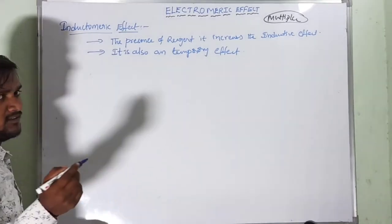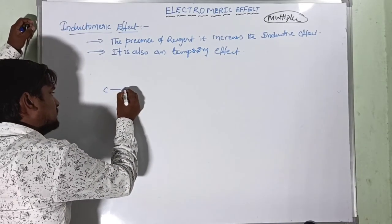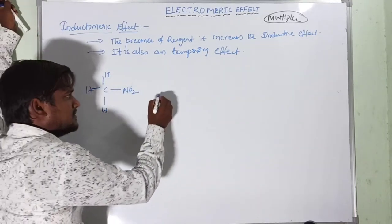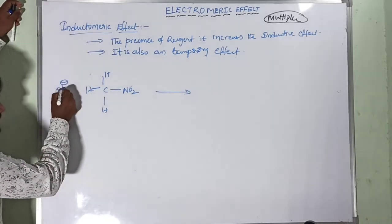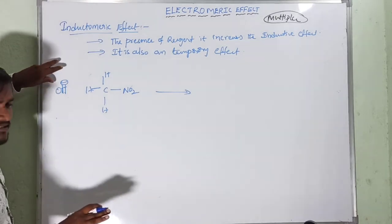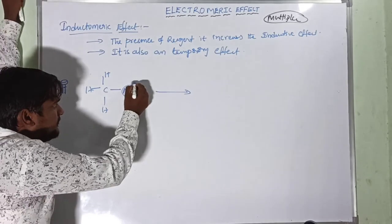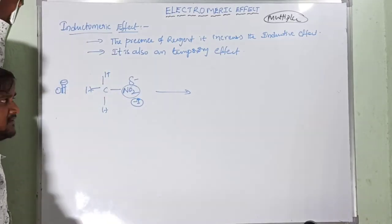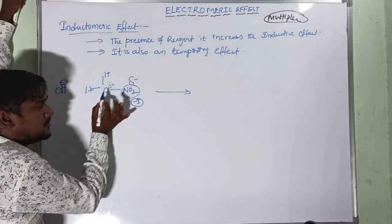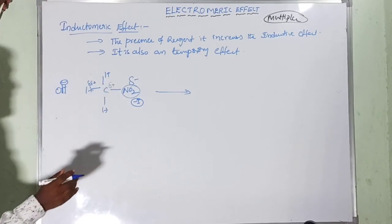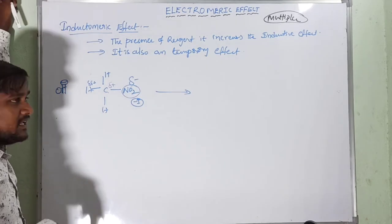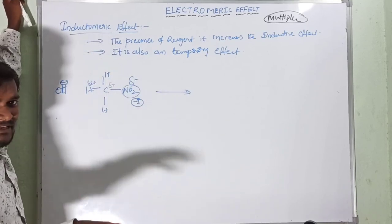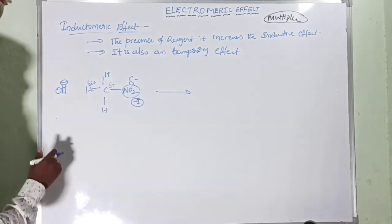Example: nitromethane (CH₃NO₂) treated with OH⁻ (a base). The nitro group has a −I effect — it pulls the electron cloud towards itself, making the adjacent carbon partially positive. In the normal inductive effect, nitrogen pulls the electron cloud towards itself.